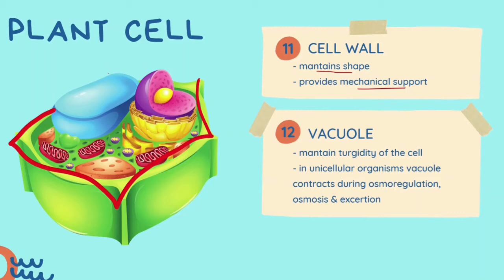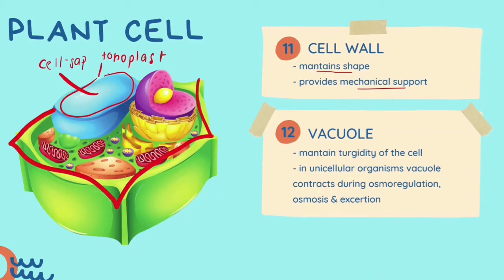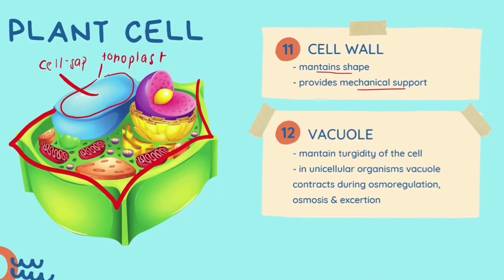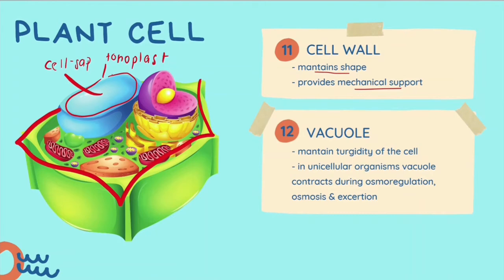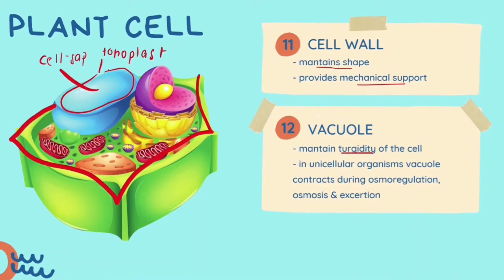Next we have the vacuole. The vacuole has a single outer membrane known as the tonoplast. Inside the tonoplast it contains cell sap, which includes water, organic acids, sugars, amino acids, enzymes, mineral salts, oxygen, carbon dioxide and metabolic byproducts. Young plants tend to have many small vacuoles while mature plants have larger vacuoles. The vacuoles in animal cells are sometimes present but very small. The vacuole functions to maintain the turgidity of the cell. In unicellular organisms, the vacuole contracts during osmoregulation, osmosis and excretion.